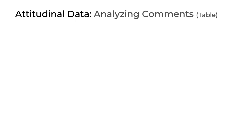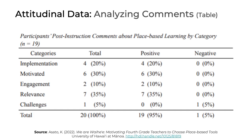Now let's talk about attitudinal data. In this example, we can see a table titled Participants' Post-Instruction Comments About Place-Based Learning by Category. The sample size is 19, and the table shows results of open-ended comments left by participants. Those comments have been analyzed and categorized by implementation, motivation, engagement, relevance, and challenges. The table has three columns: total number of comments, positive comments, and negative comments. In total there were 20 comments — 95 percent positive and 5 percent negative.